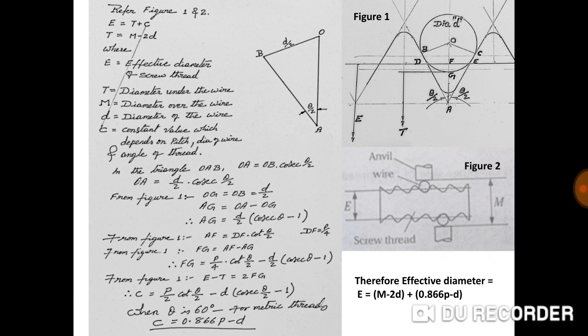A floating carriage micrometer is used since we are following the two-wire methodology. From figures 1 and 2, it is clear that effective diameter E equals T plus C, where T equals M minus 2d. Here E is the effective diameter of the screw thread, T is the diameter under the wire, M is the diameter over the wire, d is the diameter of the wire, and C is a constant whose value depends on the pitch of the screw thread, the diameter of the wire, and the angle of the screw thread.